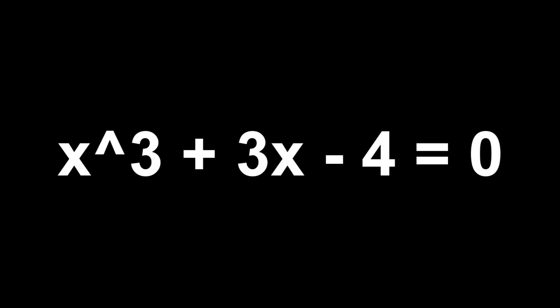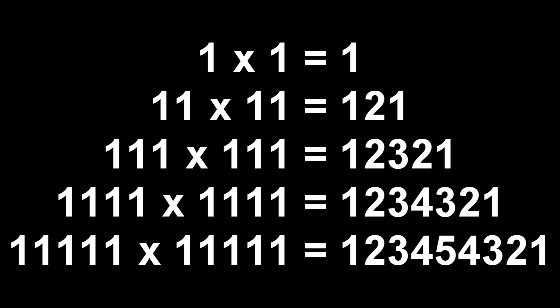Also, if you look at this pyramid of the number 1 multiplied against other numbers involving the number 1, you will see that the numbers increase and then decrease. If you look at the bottom, it goes 1, 2, 3, 4, 5, 4, 3, 2, 1.